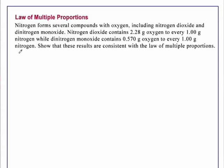Law of Multiple Proportions. Nitrogen forms several compounds with oxygen, including nitrogen dioxide and dinitrogen monoxide. Nitrogen dioxide contains 2.28 grams of oxygen to every 1.00 grams of nitrogen, while dinitrogen monoxide contains 0.570 grams of oxygen to every 1.00 grams of nitrogen. Show that these results are consistent with the Law of Multiple Proportions.